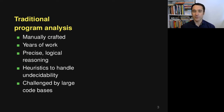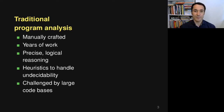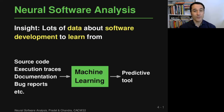Another interesting property of traditional program analysis is that it's usually challenged by large code bases — if there's more code, it's usually a problem, because the analysis may not scale that well to large programs. In this keynote, I want to talk about a different way of creating program analysis, which is neural software analysis.